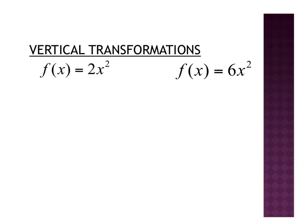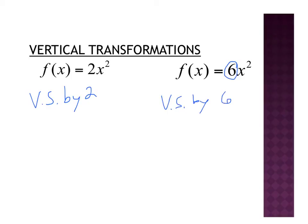Now let's take a look at a couple examples for vertical transformations. Looking at this first one, we have a 2 out in front of the x squared. That 2 is not being squared — it's just out in front of the x squared. Therefore, we have a vertical stretch by a factor of 2. Looking at the next one, we again have a coefficient out in front of the x squared, so the 6 is not being squared — vertical stretch by a factor of 6.